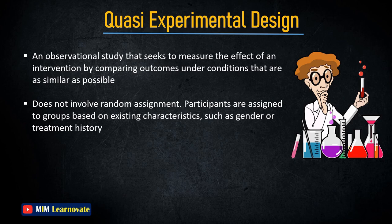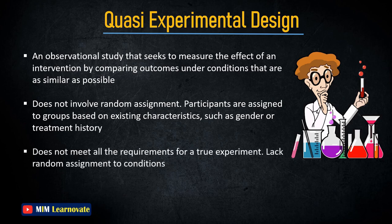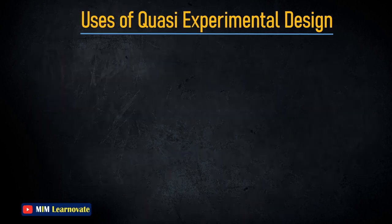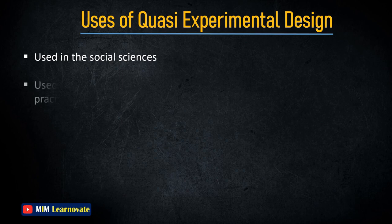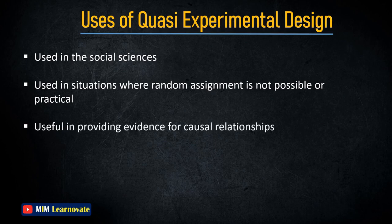A Quasi-Experimental Design is a type of experimental design that does not meet all the requirements for a true experiment. Specifically, quasi-experiments lack random assignment to conditions. They are often used in the social sciences and in situations where random assignment is not possible or practical. Despite not meeting all the criteria for a true experiment, quasi-experimental designs can still be useful in providing evidence for causal relationships.